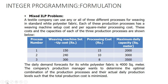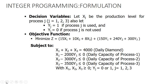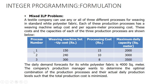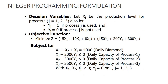Based on this word problem, we identify the decision variables, objective function, and constraints. We let x sub j equal the production level for process j, where j = 1, 2, 3 (three processes). We also let y sub j = 1 if process j is used, and y sub j = 0 if process j is not used — so it is already considered a binary number, either 1 (yes/used) or 0 (no/not used).